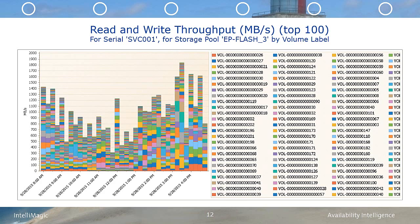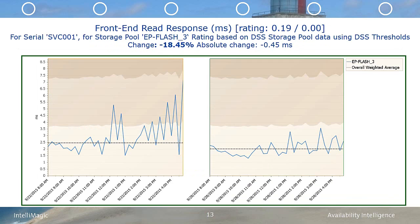In this next chart, we're going to compare the response times for 9/28 when the indexes were added with the response times from 9/23. It will clearly show that the removal of the workload from the bully volumes resulted in a significant improvement in the front-end response times. This chart shows that the front-end response time improved by an average of 0.45 milliseconds, or 18.45%. Additionally, the risk improved from a warning on the left to no risk on the right.